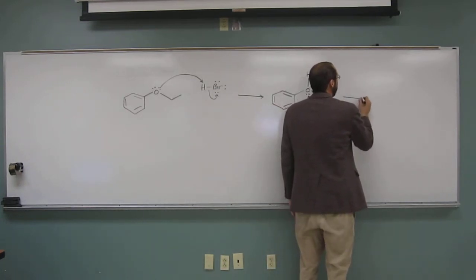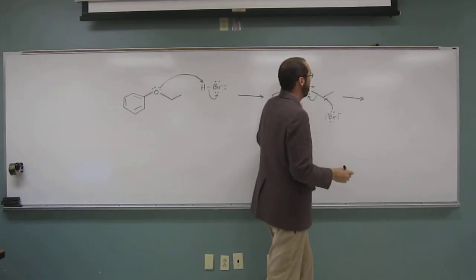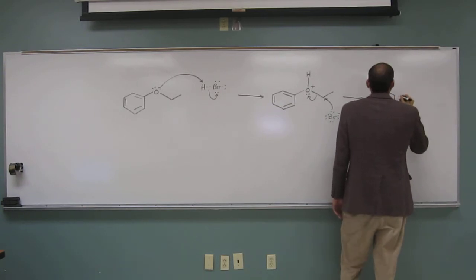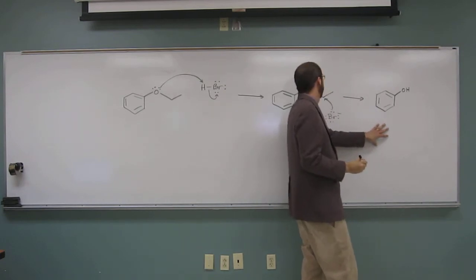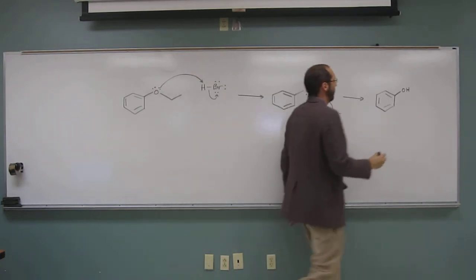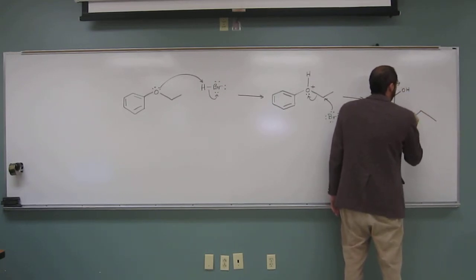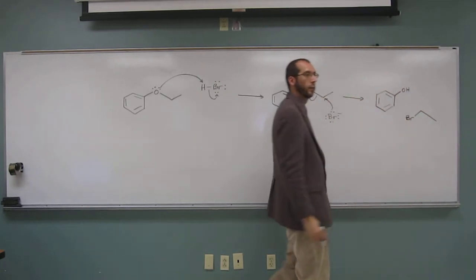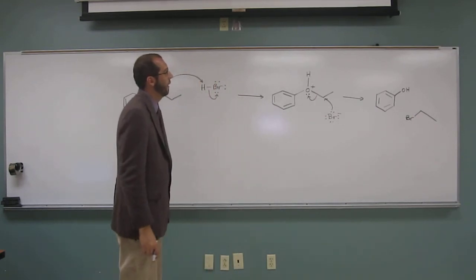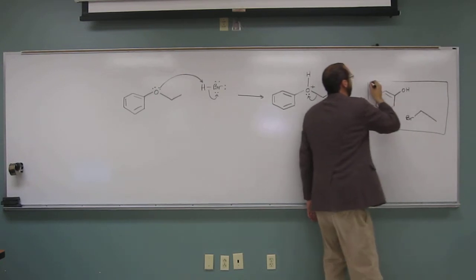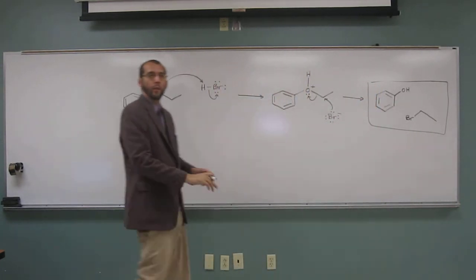So when we do that, of course, we're going to make phenol, like we've been saying. Like that. And the other thing we're going to make is, right? Alkyl bromide. Okay? So that's the product mixture there. So no other steps. Any questions on this one?